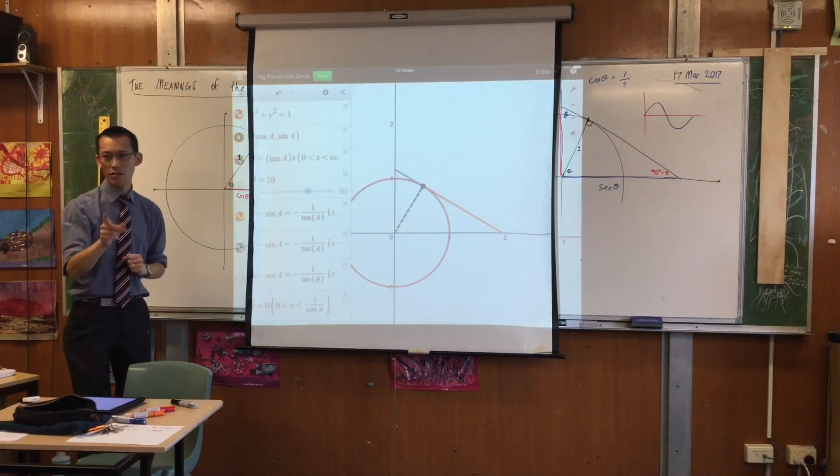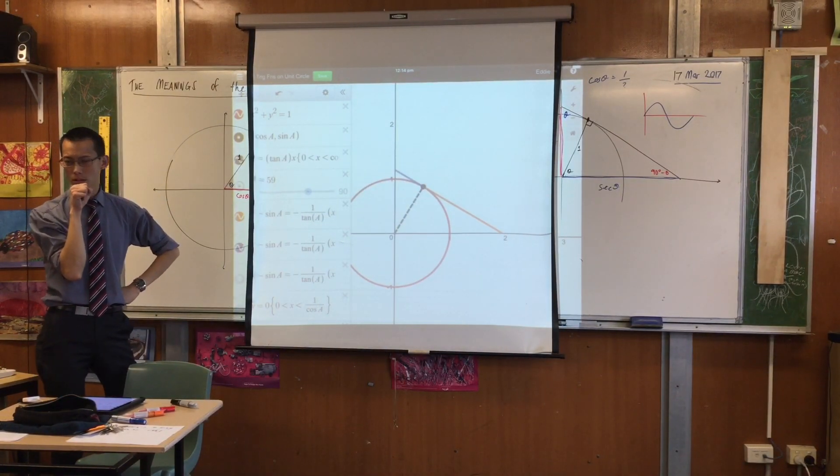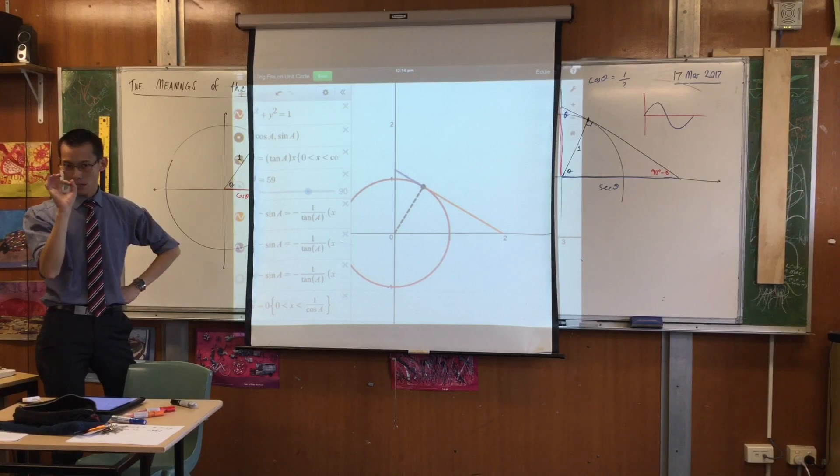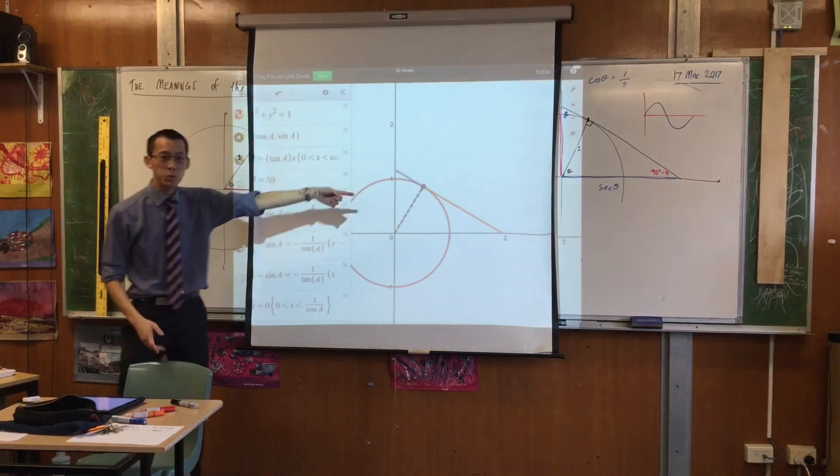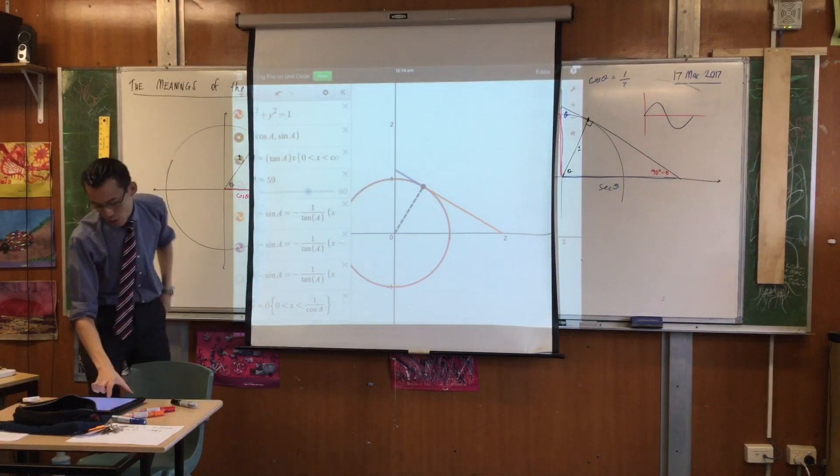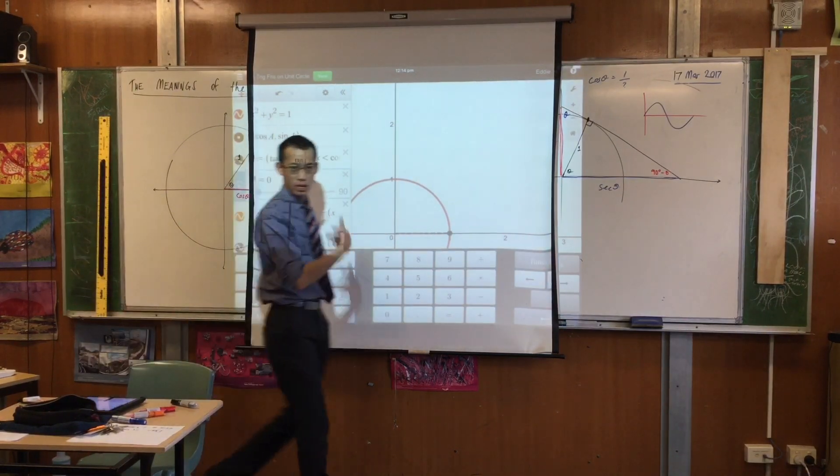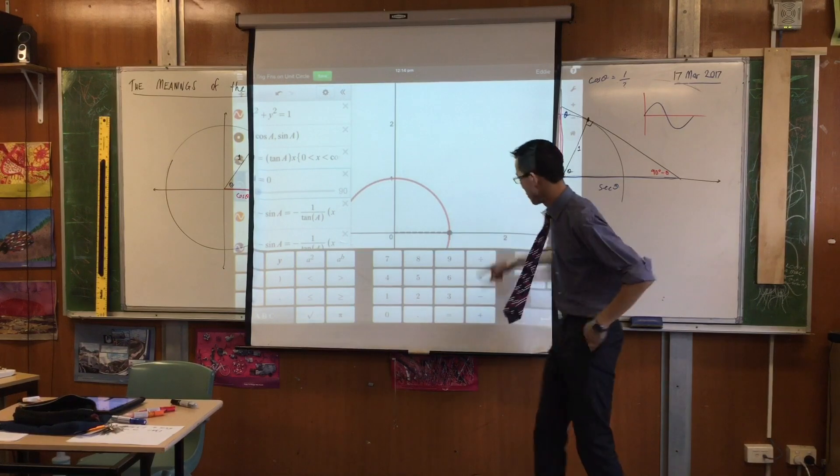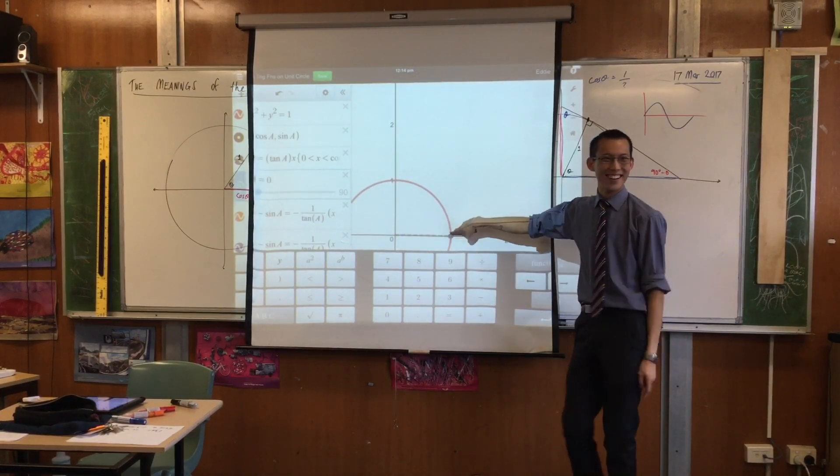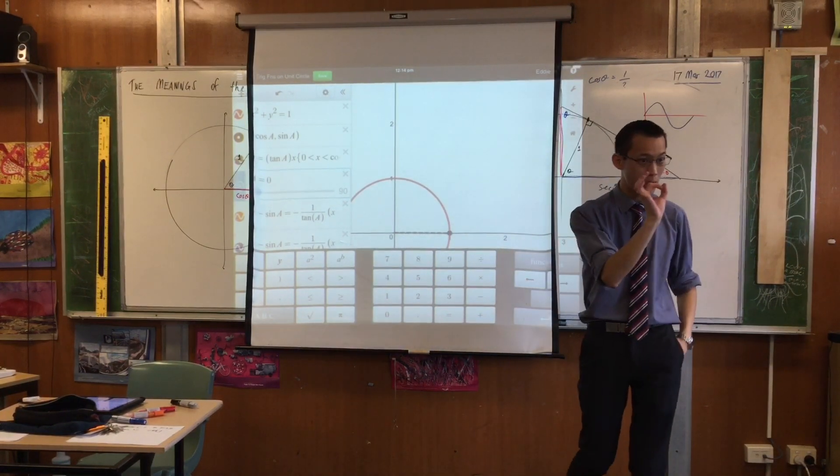Think. Tan zero. What is tan zero? Zero. It's zero. Of course it has to be, because watch what happens to the orange line when I drag us back to our starting point. There it is. Do you see where the orange line is? It's right there. And it's not going anywhere, because tan zero is zero.